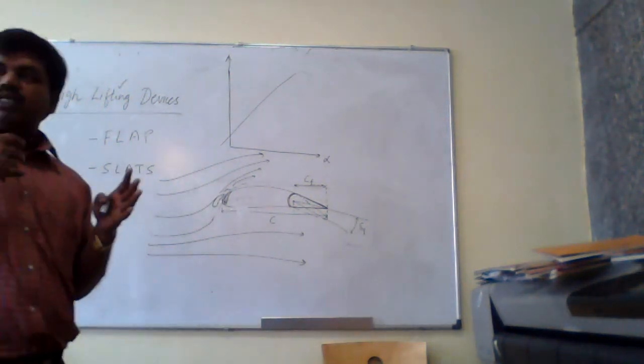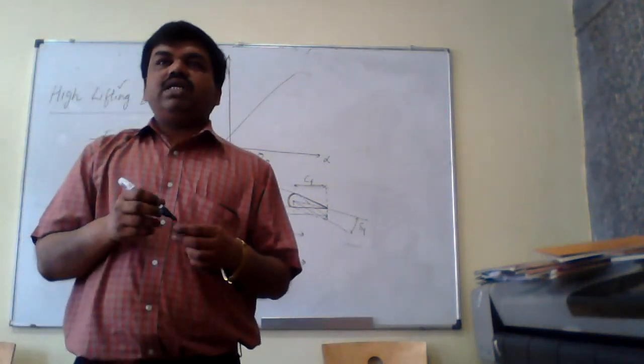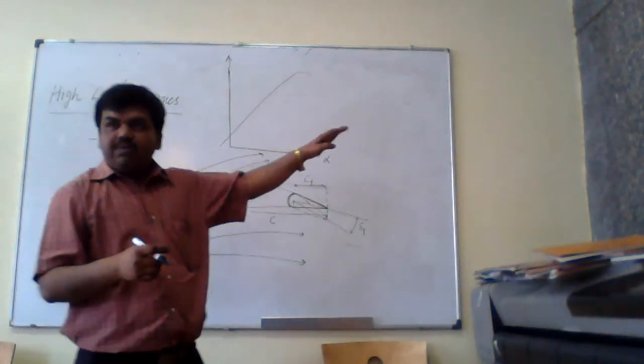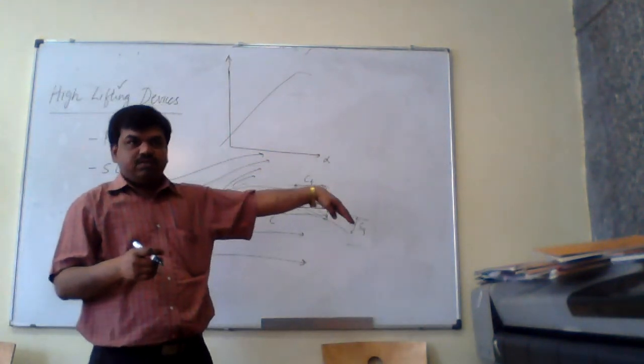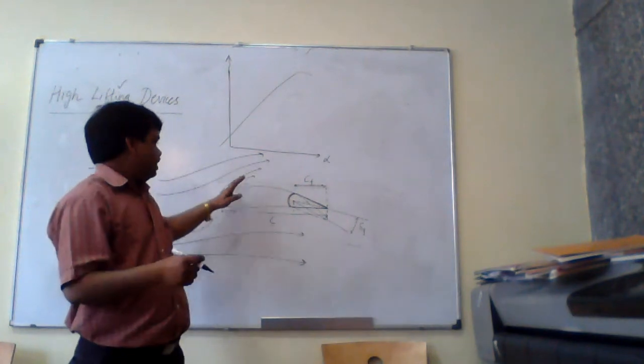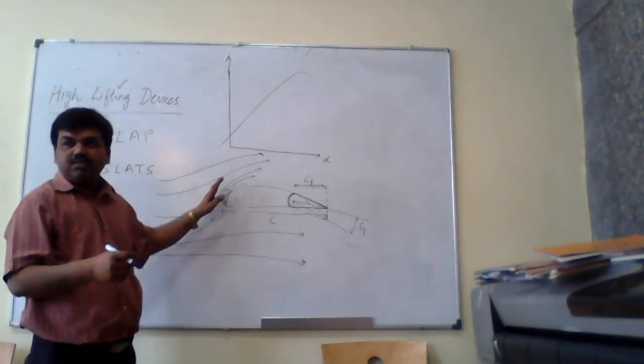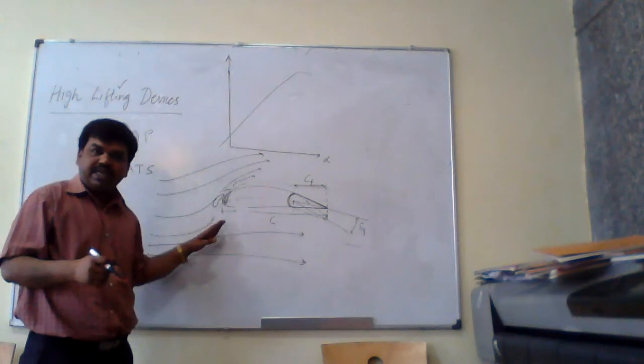Generally flaps are extended. We agree with this, flaps are moved down, isn't it? Whereas slat is extended forward so that it creates a gap.